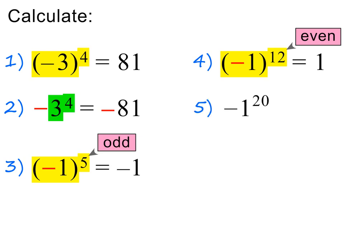Next, we have minus 1 without brackets, to the power of 20. And because there are no brackets, only 1 is the base raised to the power of 20. This means that the minus just stays in front in the answer. And 1 to the power of 20 is 1. Please pause to check all my working.